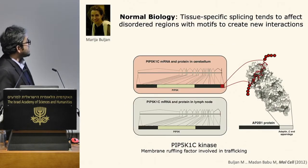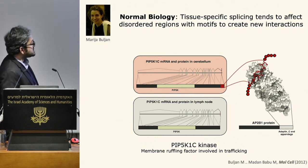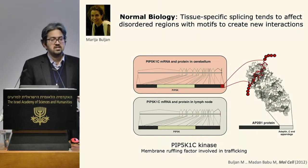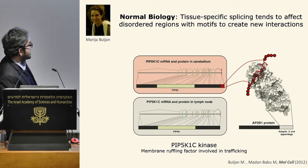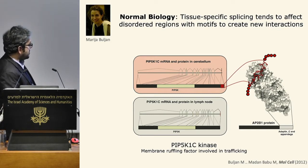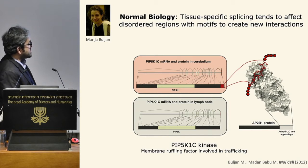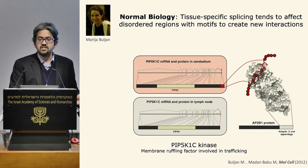In one of our earlier studies, we analyzed transcriptomes from multiple human tissues and showed that alternative splicing tends to affect short segments that encode linear peptide motifs, rewiring protein-protein interactions in a tissue-specific manner. For example, the phosphatidylinositol phosphate 5 kinase gene: the brain isoform includes a short unstructured segment exposing an AP2 binding motif, allowing interaction with the AP2 protein, enabling more effective endocytosis in the brain, whereas in the lymph node, the protein is present at the membrane for longer periods.